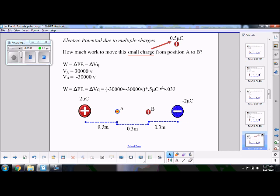So, we multiply that 0.5 microcoulombs and we get 0.03 joules. Notice it is a negative 0.03 joules, because it was a negative change in voltage. And also think of it conceptually. That positive charge is going to want to move away from point A towards point B, because the electric field goes from left to right in that area. Remember, the electric field goes from positive to negative.